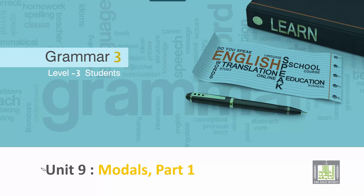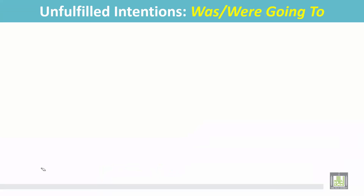Grammar 3 for Level 3 students. Unit 9: Modals, Part 1. Unfulfilled intentions — was or were going to.